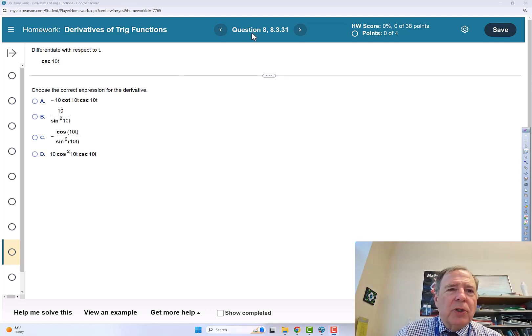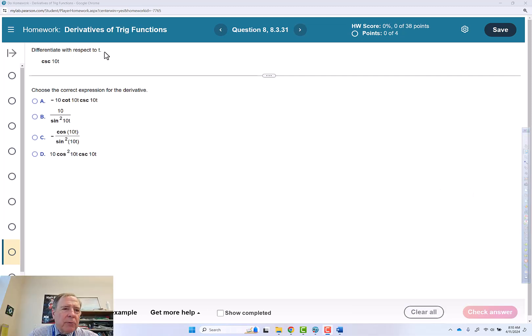This is question 8 of the derivatives of trig functions assignment. So differentiate with respect to t. We have cosecant of 10t.